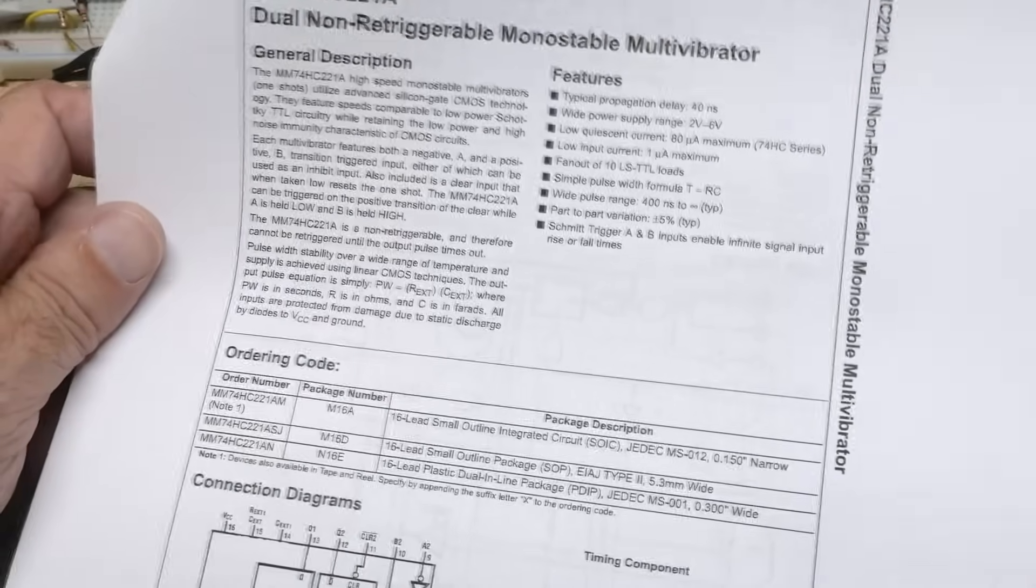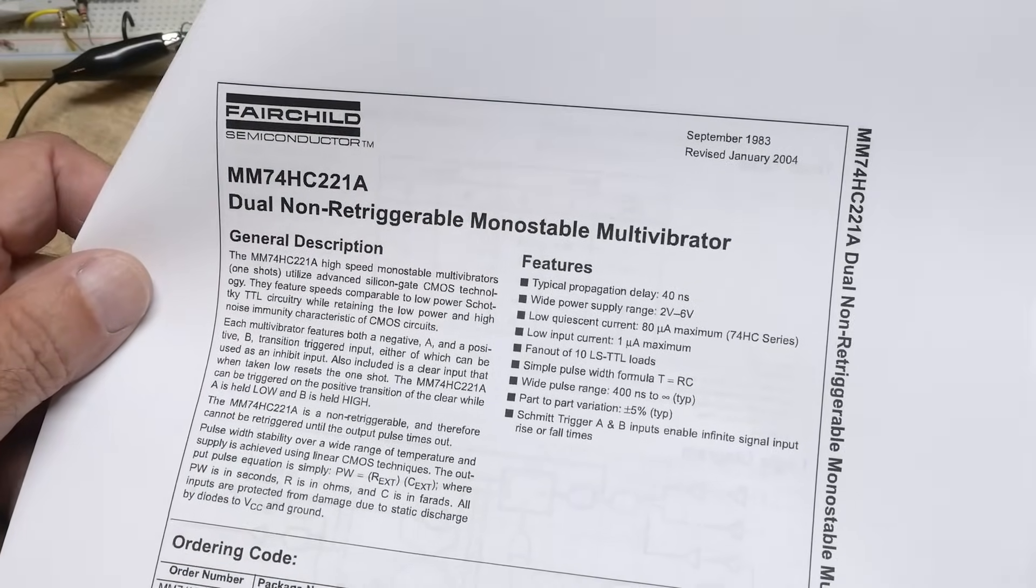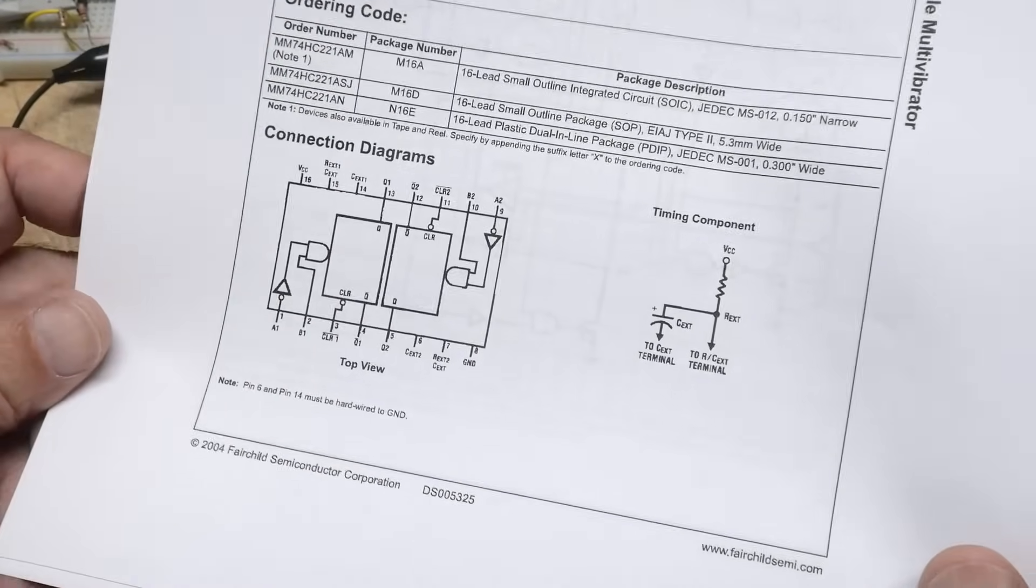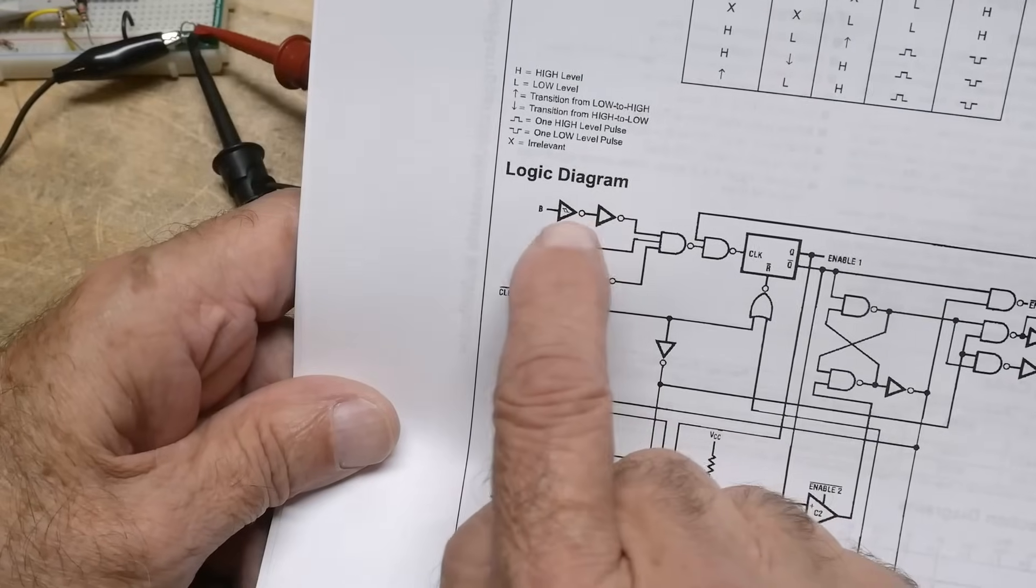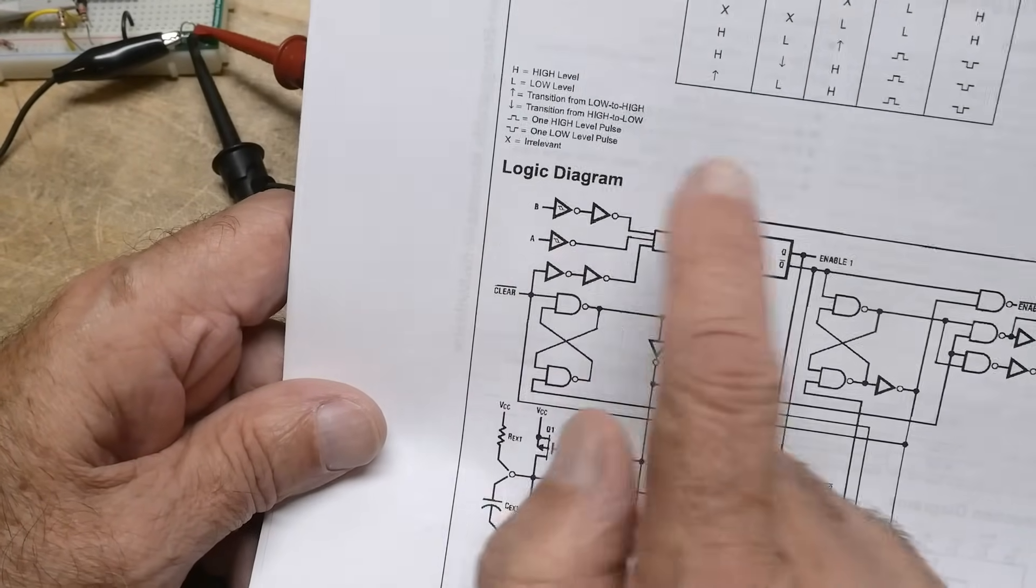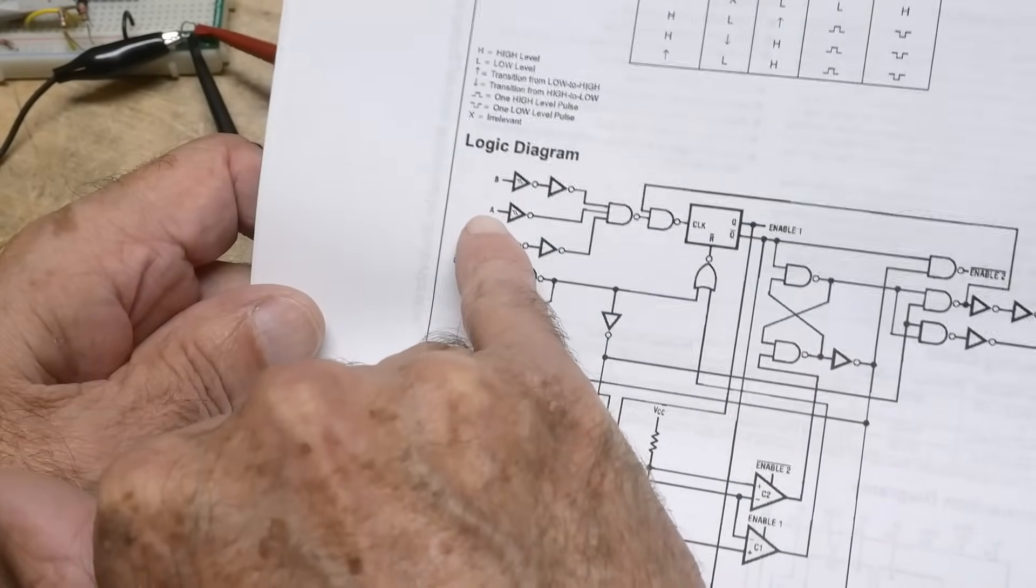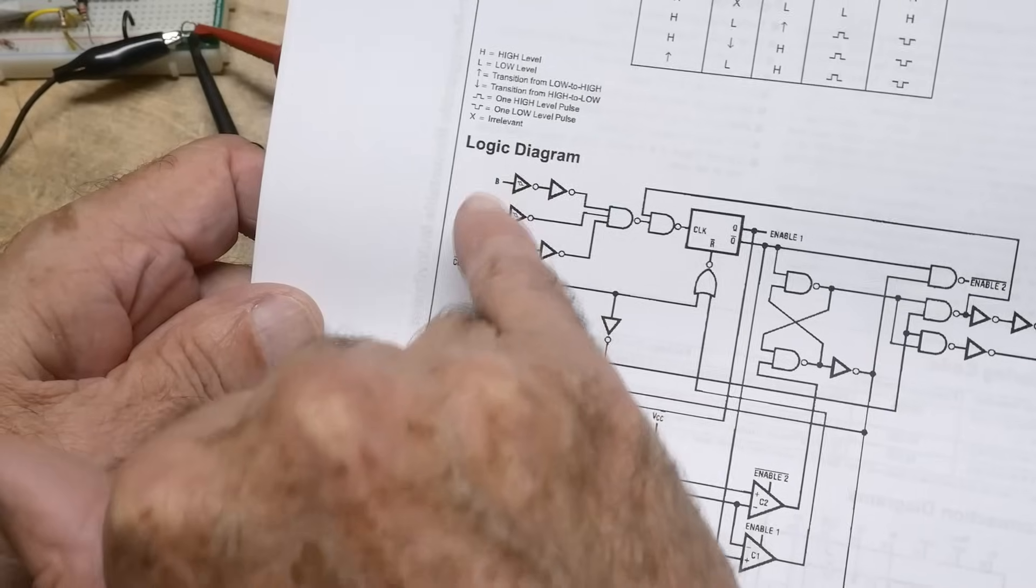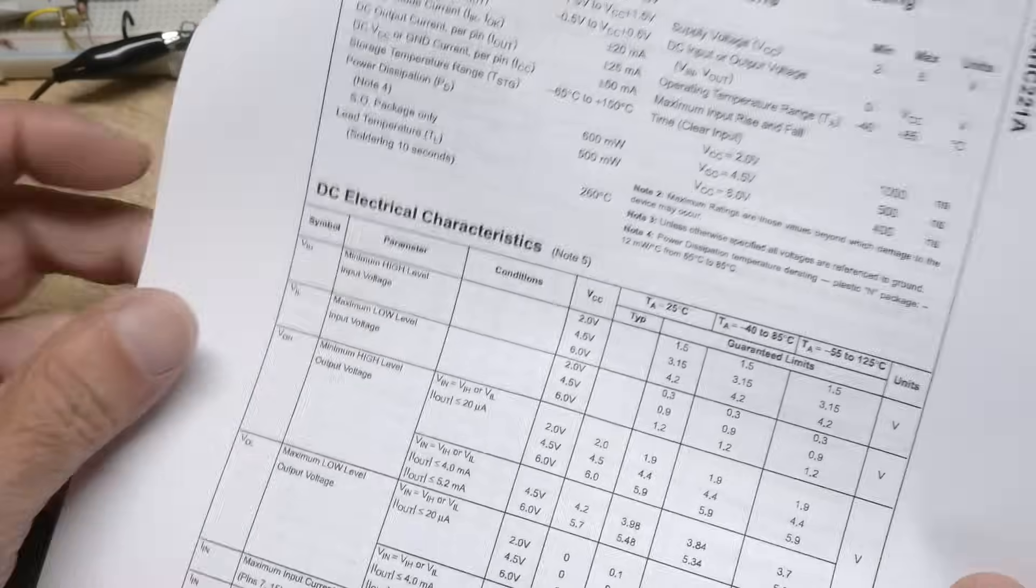So here is a Fairchild part. Dual, non-retriggerable, monostable. Now on this datasheet, they show B with a Schmitt trigger input, and they show A with a Schmitt trigger input. So I don't know if this part is different, or they drew it wrong. They also didn't put a little NOT A on this one. They just call them A and B on this part. So yeah, it's the exact same part, but the datasheets read different.